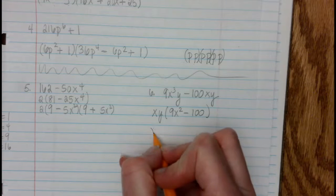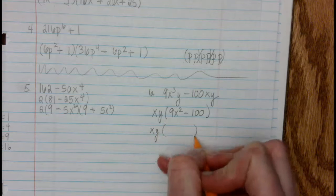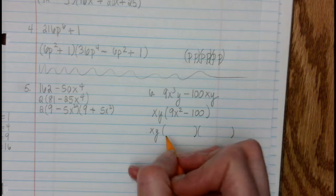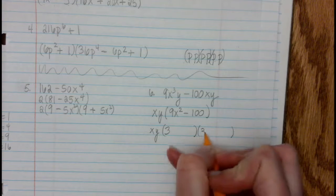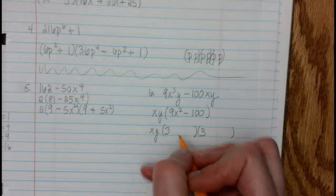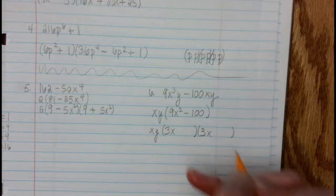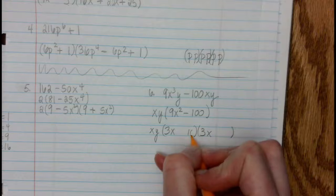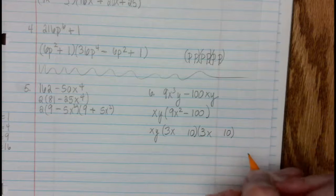So we're going to set up two parentheses. Square root of 9 is 3. Square root of x squared is x. Square root of 100 is 10. And then we use different signs.